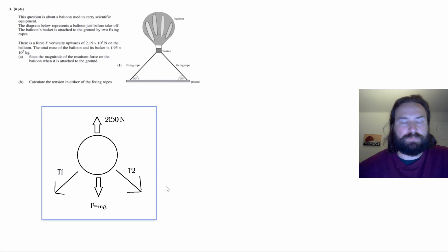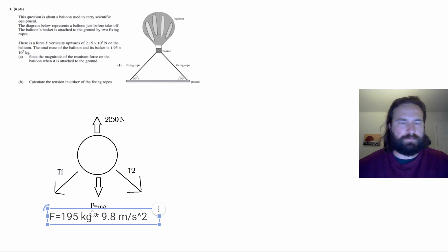So the first thing I did was calculate the downward force here, so it's just the mass of the balloon, which we're told is 195 kilograms times the acceleration due to gravity, which is 9.8 meters per second squared. And that's going to give us this downward force of 1911.